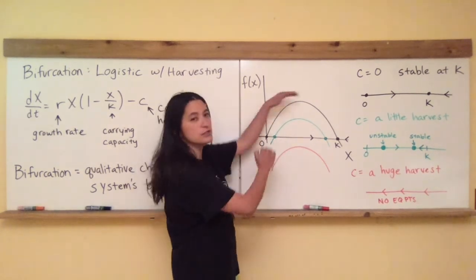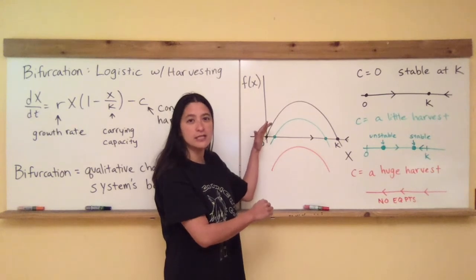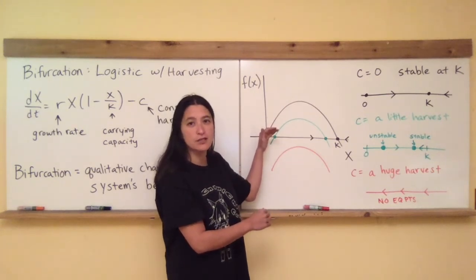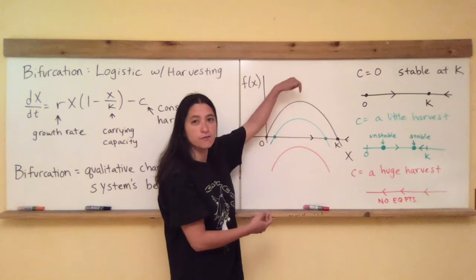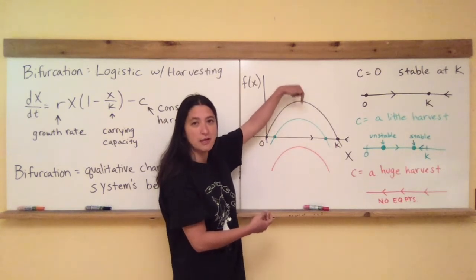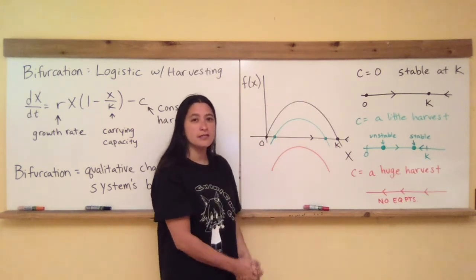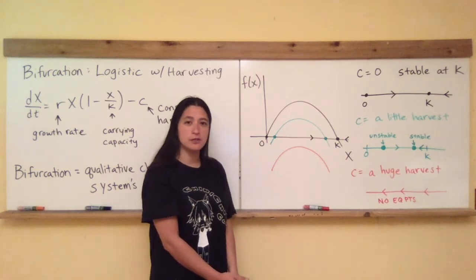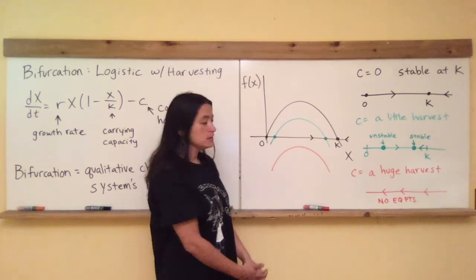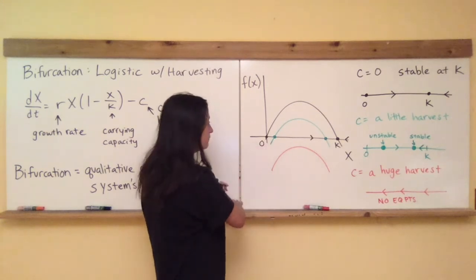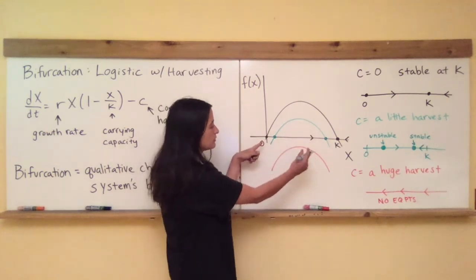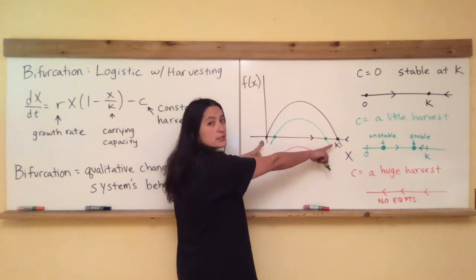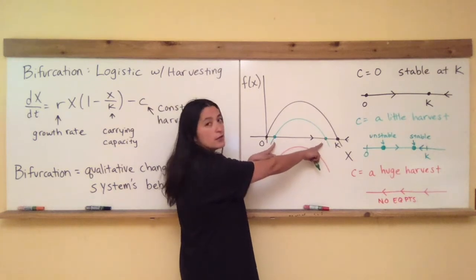Now what happened to the phase line and what happened to the equilibrium points and their stability? So you can kind of still read that off the graph here, where when I pull it down a little bit, these black points that used to represent the equilibria are now getting squeezed a little tighter together. So the unstable and the stable equilibria have now come closer together.